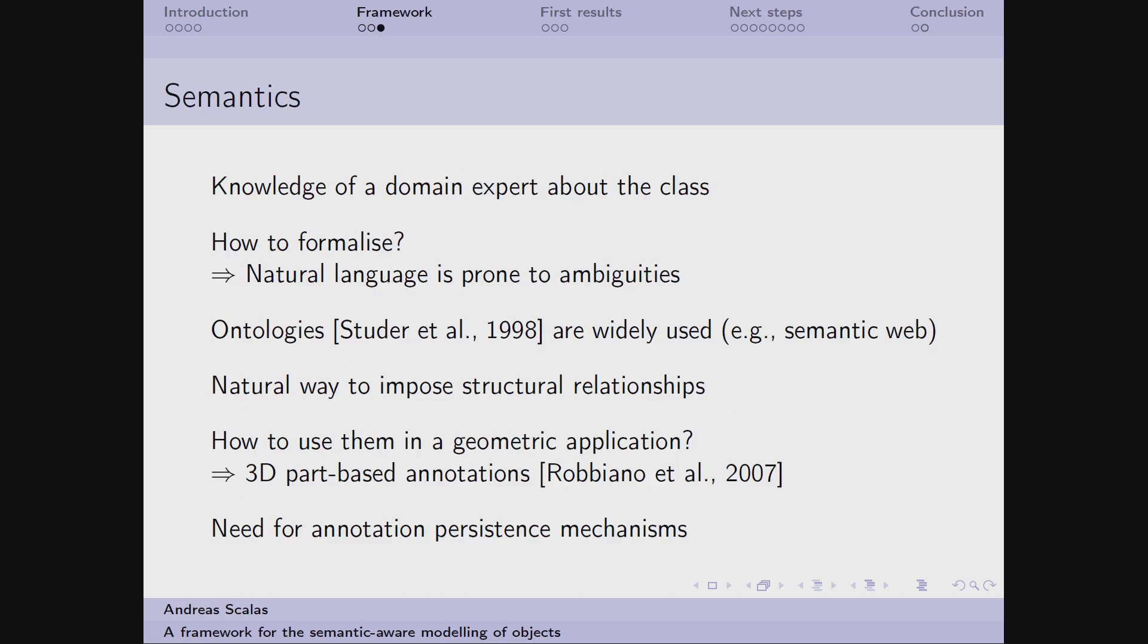Now, talking about the semantics of the class, I said that it should be the formalization of the domain expert knowledge. But how can it be possible to formalize it? The natural language is prone to ambiguities, and furthermore it is not machine-ingestible, or at least not yet. So a better way for formalizing the knowledge is to exploit the concept of ontology. And this conceptualization of knowledge is widely used, for example in the semantic web. And they allow us to impose, simply, some structural relationships between parts. For example, the hand is connected to the forearm, and so on.